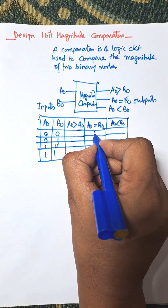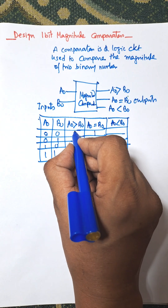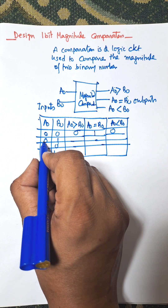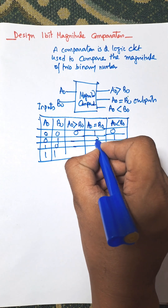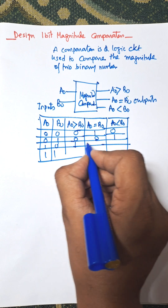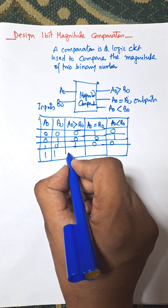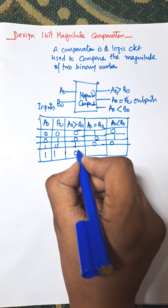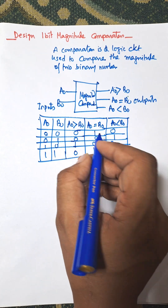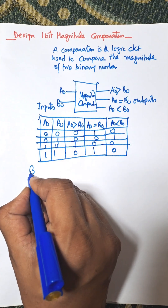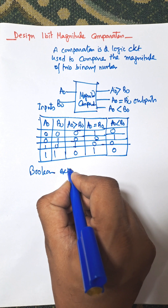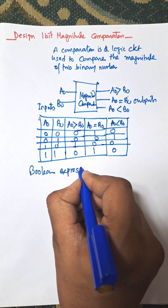For the first combination, 0 is equal to 0, so the a0 equal to b0 column will be 1 and all others are 0. For 0-1, b0 is greater than a0, so that output is 1 and the remaining are 0. For 1-0, a0 is greater than b0, so that output is 1 and remaining are 0. For 1-1, both are equal, so the equal column will be 1.